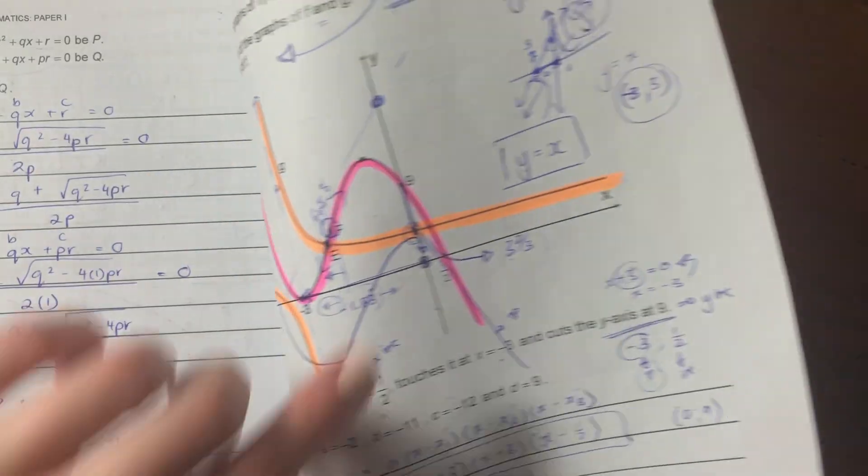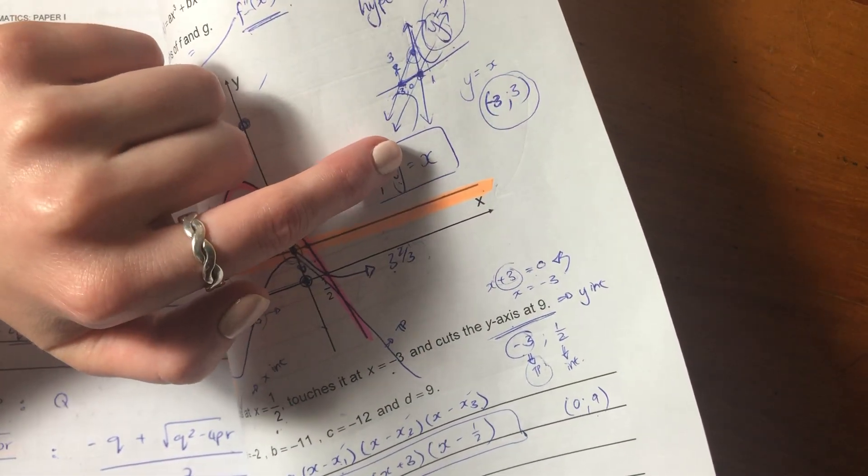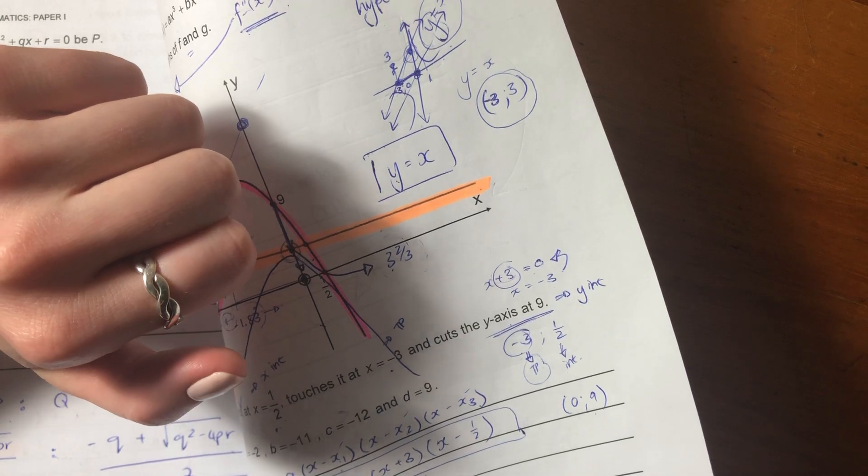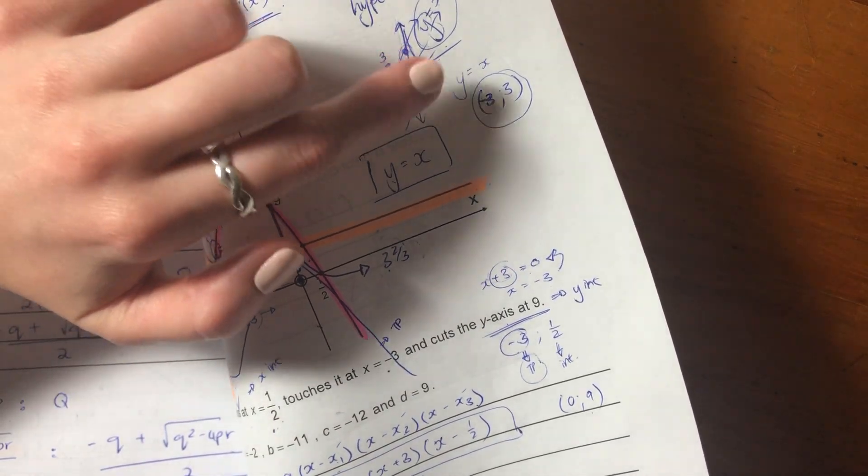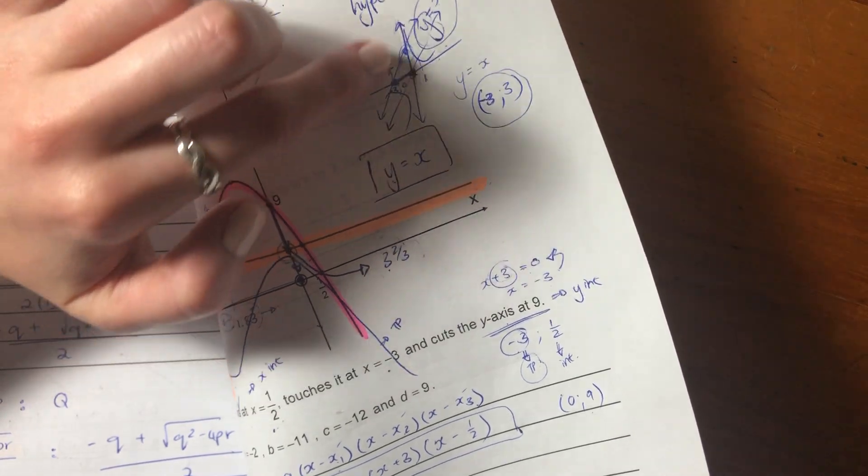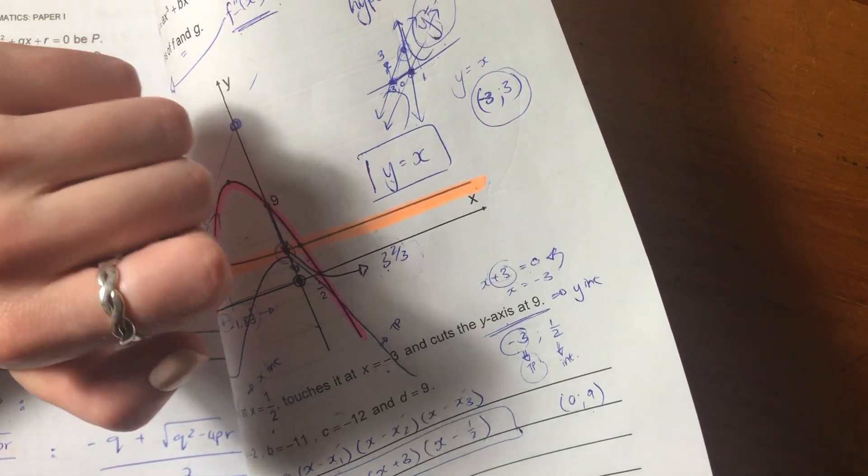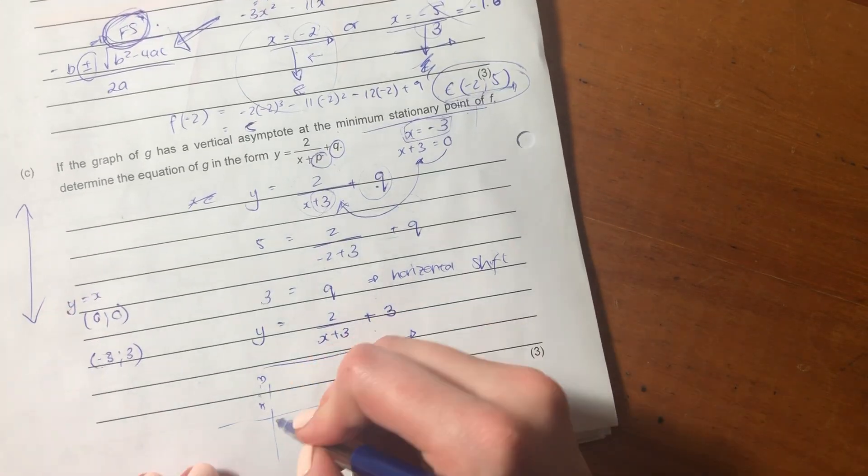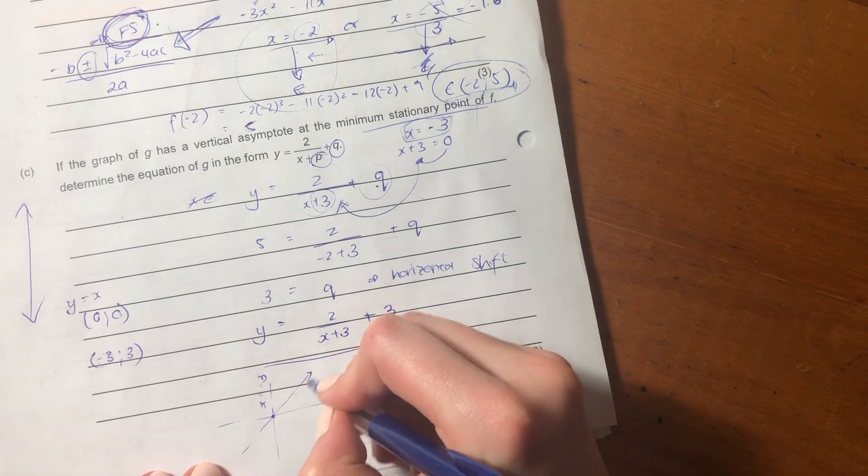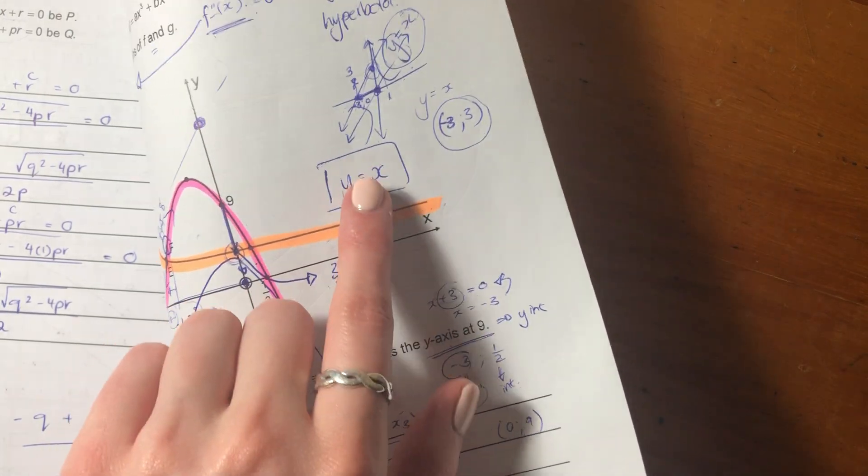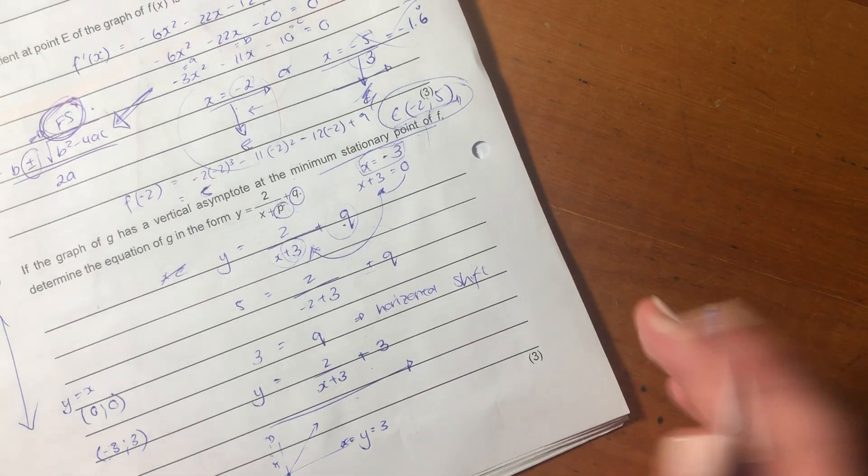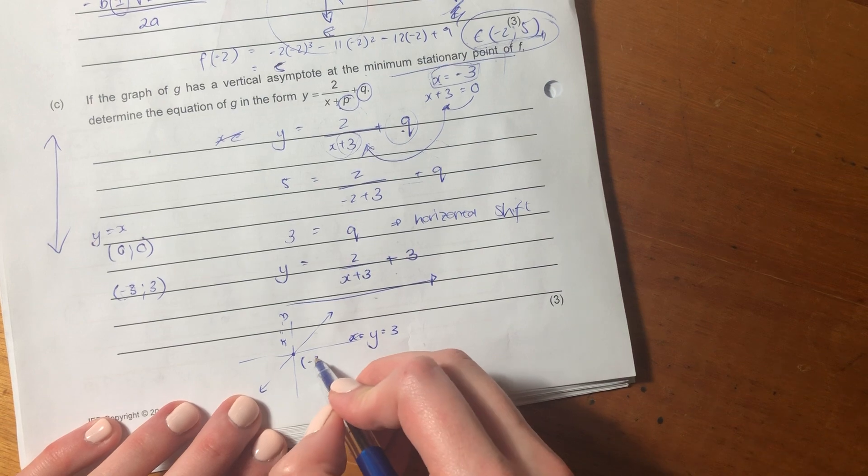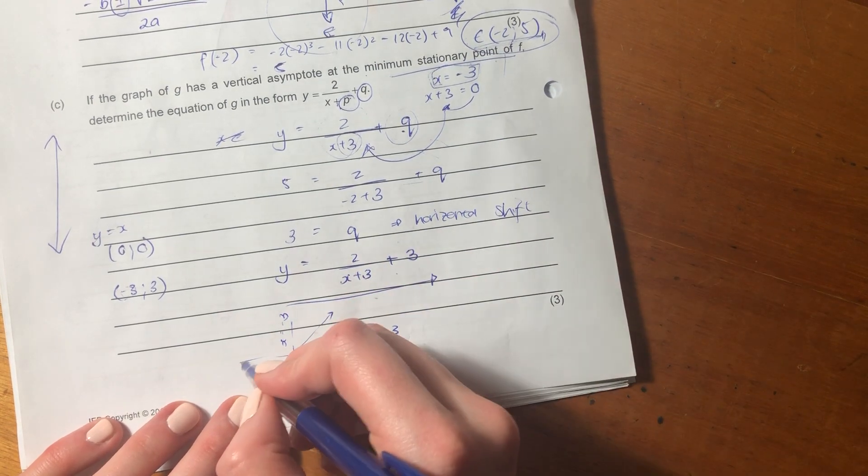We can tell it's been shifted from this equation. So what this equation tells us is it actually tells us where the two asymptotes meet. We know that this asymptote is where Y equals 3, and this one is where X equals negative 3. Now, we know with a hyperbola, if it was just a normal hyperbola where it hadn't been shifted, our axis of symmetry is this Y equals X line.